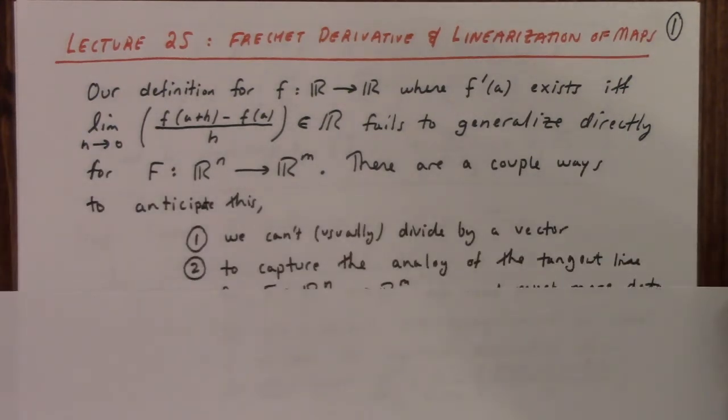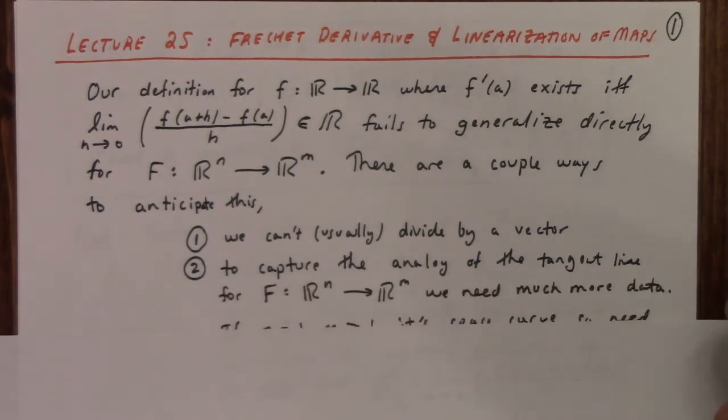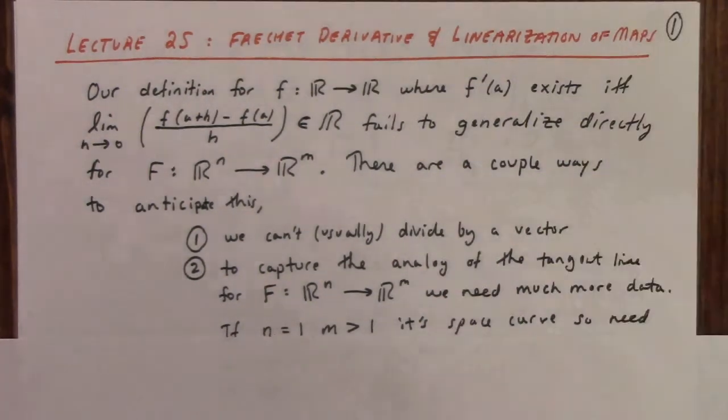And then the other thing is, well, the whole idea of the derivative was really wrapped up in the limit of the secant line becoming a tangent line, right? And if you start thinking about what does it geometrically mean, the analog of the tangent line for mappings from R^n to R^m, well, it's more complicated than just an object of the same type. Usually. There are some exceptions.